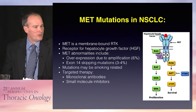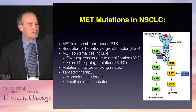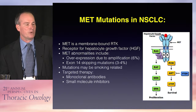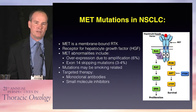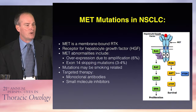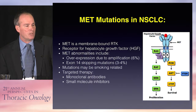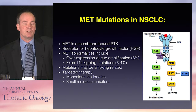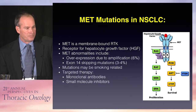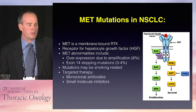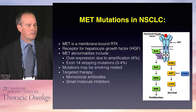MET is a membrane-bound receptor tyrosine kinase and the receptor for hepatocyte growth factor. The common MET mutations seen are amplification mutations causing overexpression, found in about 6% of patients with non-small cell lung cancer adenocarcinomas. The exon 14-skipping mutation occurs in 3% to 4% of patients. These mutations may be smoking-related. There are targeted therapies including monoclonal antibodies as well as small molecule inhibitors that can target the kinase activity of MET.